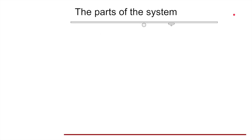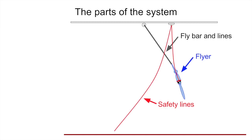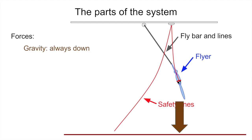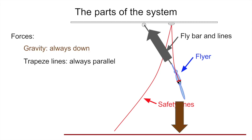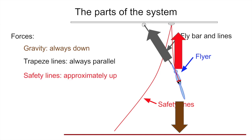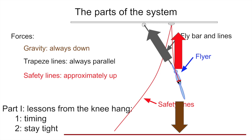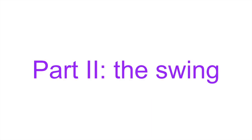Let me briefly remind you of the parts of the system I showed in part 1. There's the fly bar and lines, the flyer, and the safety lines holding the flyer up. Those are subject to forces: gravity pulling the flyer down, the trapeze lines pulling the flyer parallel to the lines towards the anchor point, and the safety lines which pull the flyer more or less up. In part 1, I talked about the lessons from the knee hang — the importance of timing and staying tight. In this part, part 2, I'm going to talk about the swing.